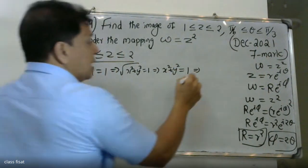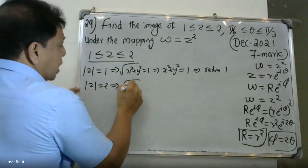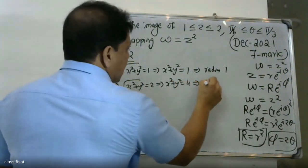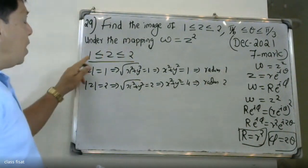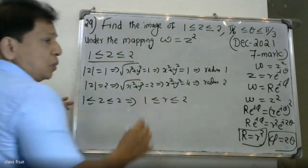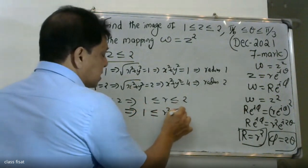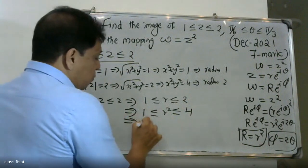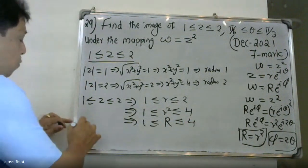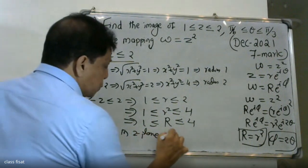For the radial condition 1 ≤ r ≤ 2: when r = 1, R = r² = 1, which gives x² + y² = 1. When r = 2, R = r² = 4, which gives x² + y² = 4. So 1 ≤ |w| ≤ 4.